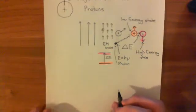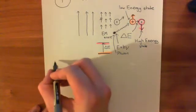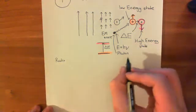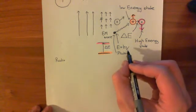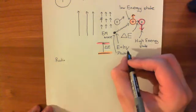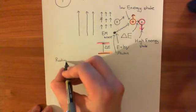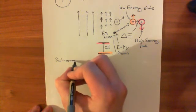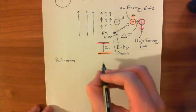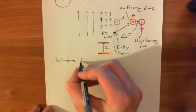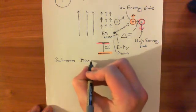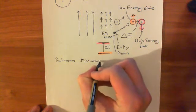The electromagnetic spectrum consists of radio waves at one extreme, where the frequency is very low and the wavelength is very high. So radio waves have a very, very low frequency. After radio waves, you have microwaves.